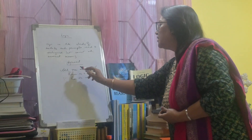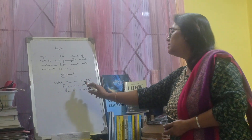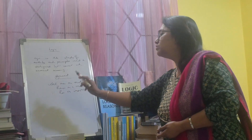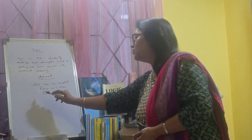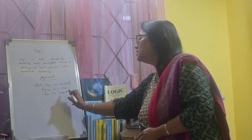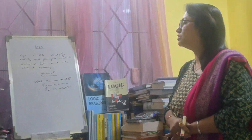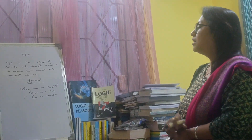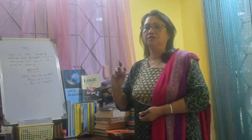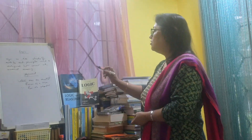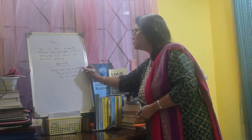All men are mortal — this is the first premise. Ram is a man — this is the second premise. And therefore Ram is mortal — this is the conclusion. An argument means a group of propositions where we can derive from the premises to the conclusion.